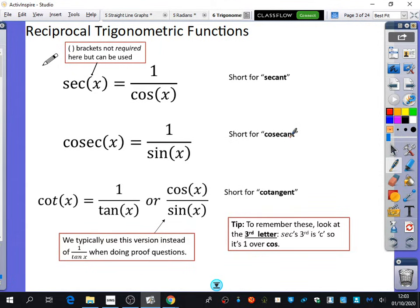So sec is short for secant, cosec is short for cosecant, and cot is short for cotangent. The way that I remember these is to look at the third letter of them to help you remember which one they go with. The third letter of sec matches with cos, the third letter of cosec matches with sine, and obviously cot is going to go with tan, but it still works that the third letter goes like this.